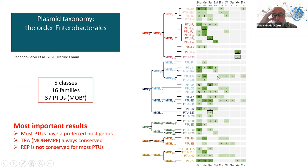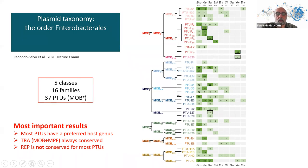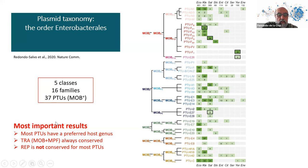Each PTU has a determined host range — these are the genomes in which these plasmids have appeared naturally, not the bacteria to which we can transfer the plasmid in the lab, which is a different thing. Here you have all the PTUs from our published paper: 37 PTUs which are MOB-plus, meaning they are transmissible by conjugation, containing most of the plasmids in Enterobacteriales.